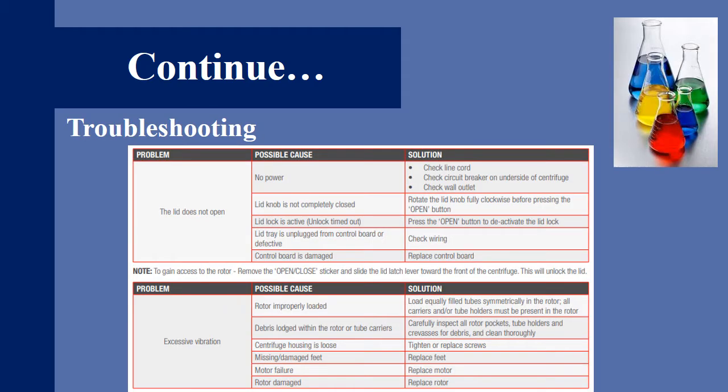Troubleshooting of the centrifuge. First problem is the lid does not open. The possible causes are: no power, lid knob is not completely closed, lid lock is active, lid tray is unplugged from the control board or defective, control board is damaged. If we have no power then we have to check the line cord, check the circuit breaker on the underside of the centrifuge, check the wall outlet. If the lid knob is not completely closed, rotate the lid knob fully clockwise before pressing the open button. If the lid lock is active, press the unlock timeout, press the open button to deactivate the lid lock.